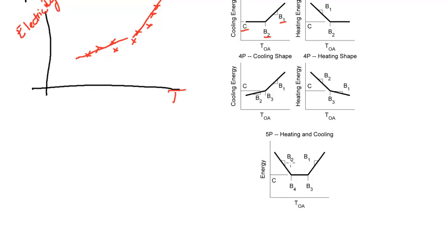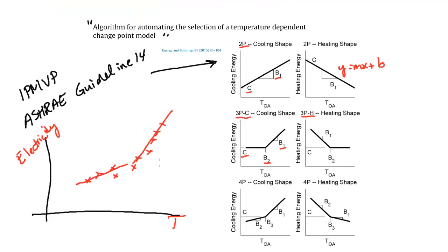The problem lies in: let's say you have a data set that looks like this. Which one of these should you use? Should it be this, which would be a 4P cooling shape? Should it be rather a 3P shape, or should it be just a simple 2P regression line through that data? Which one should it be and why? What we wanted to do is take the guesswork out and actually have an algorithm that says: you give me input data, I will give you back the model that you should be using to fit that data.